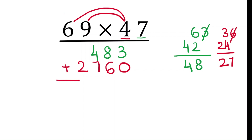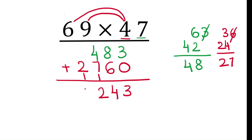Now add the two rows: 3 plus 0 is 3, 8 plus 6 is 14 — write 4 and carry 1, 4 plus 7 is 11 plus 1 is 12 — write 2 and carry 1, and finally 1 and 3. The product of 69 and 47 is 3243.